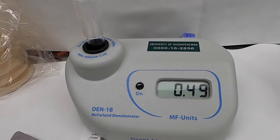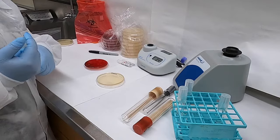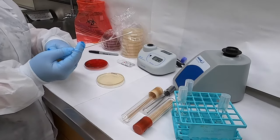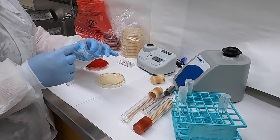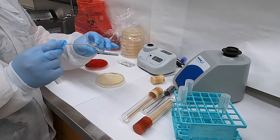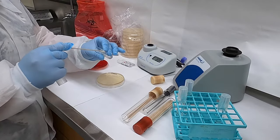So there we've got it, and we're ready to now inoculate our plate. We do this using a sterile swab. We start by first fully immersing that swab into our bacterial suspension and then wringing out the excess liquid on the side of the tube.